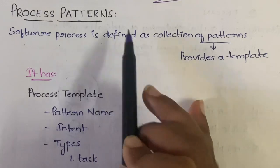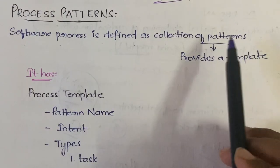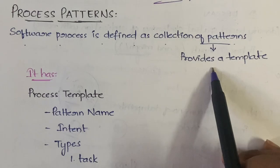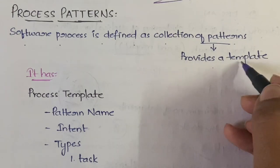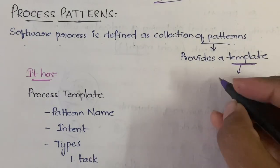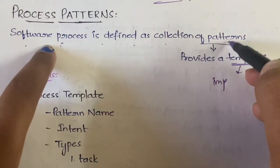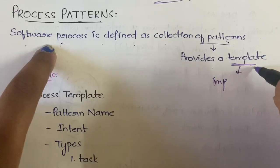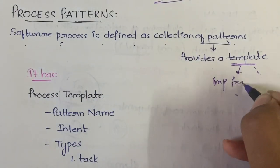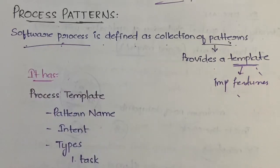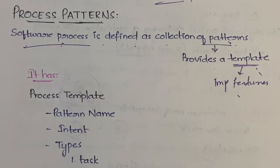First of all, software process is defined as a collection of patterns. This pattern will give us a template, and this template will have all the important characteristics of the software process. With the help of these process patterns, you can define a software project clearly — you can show and exhibit the software project.